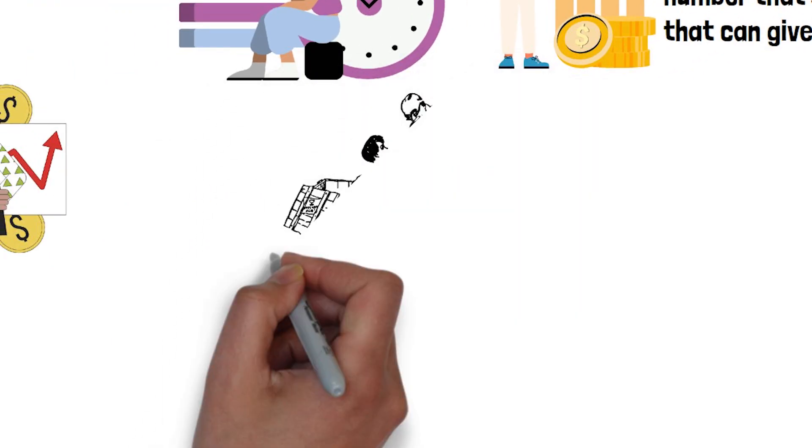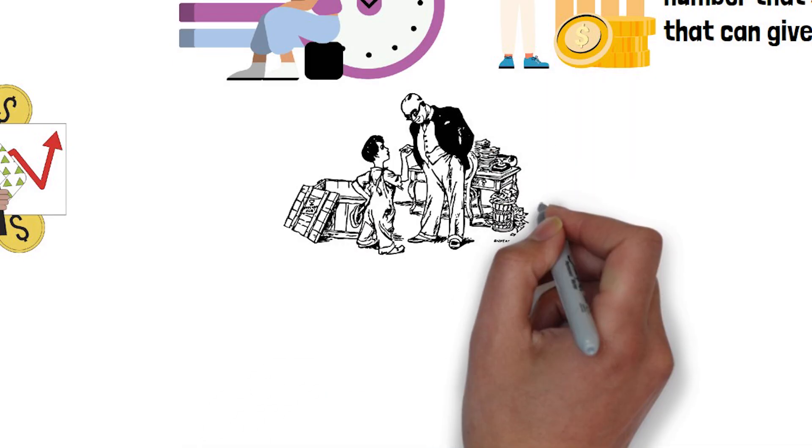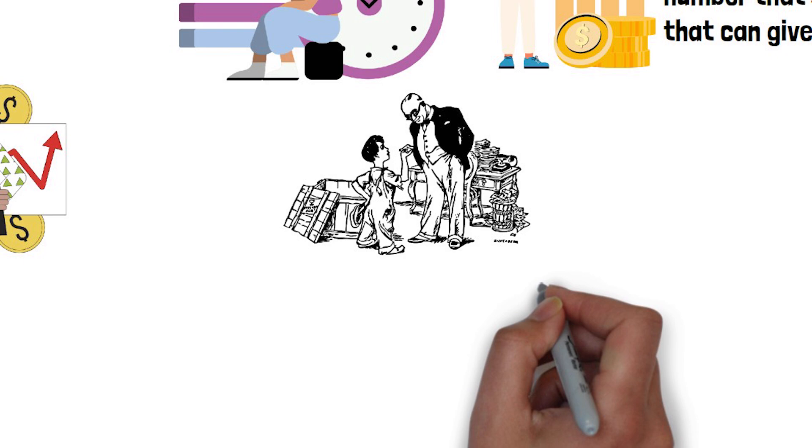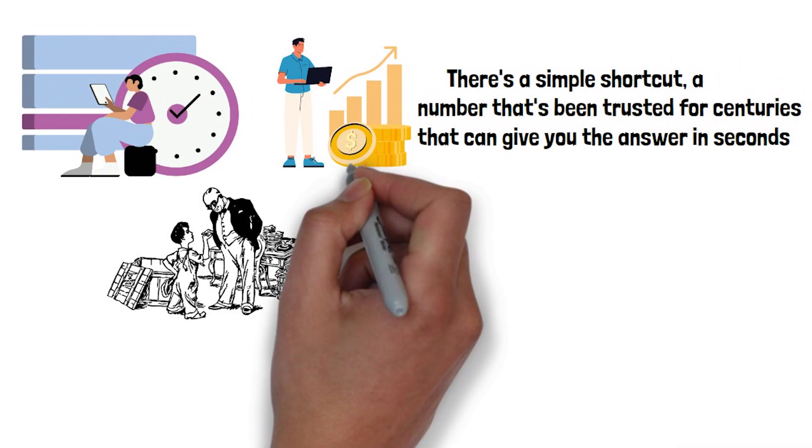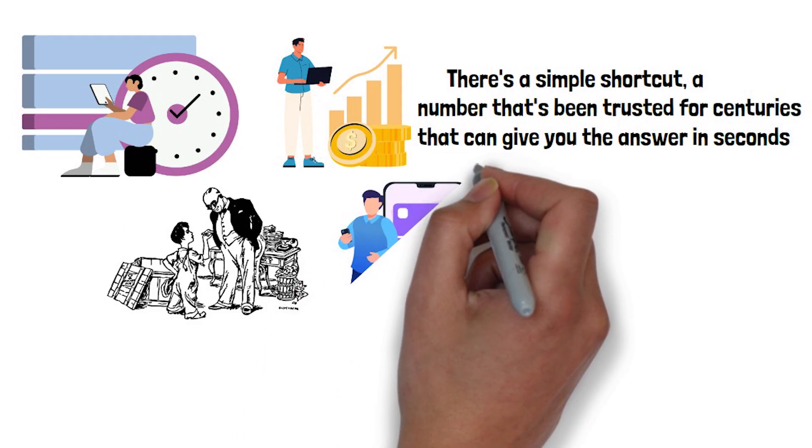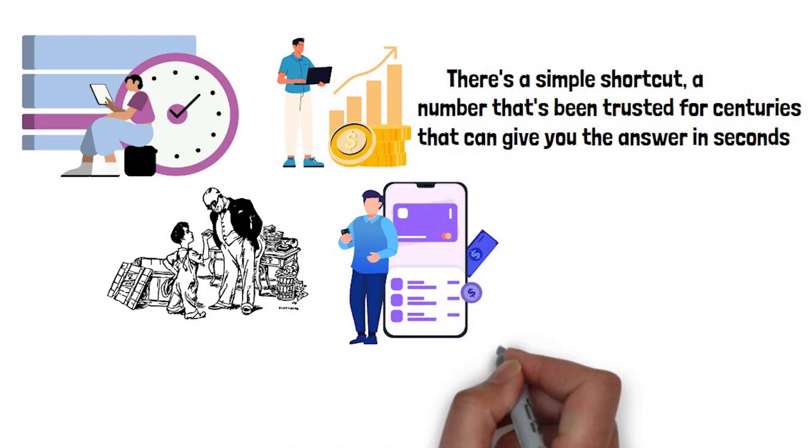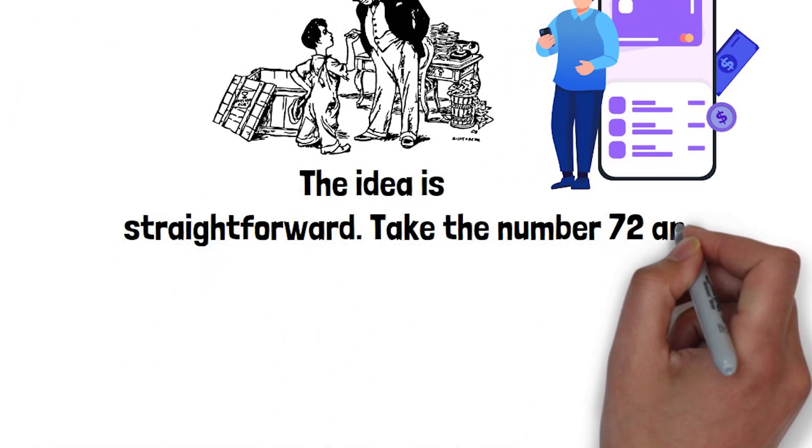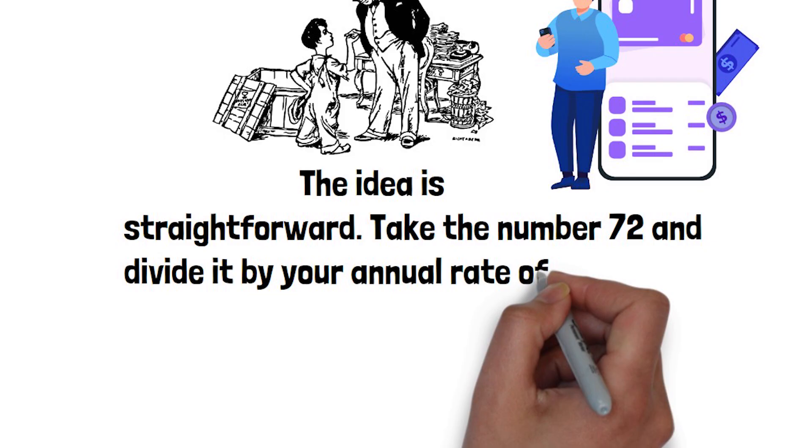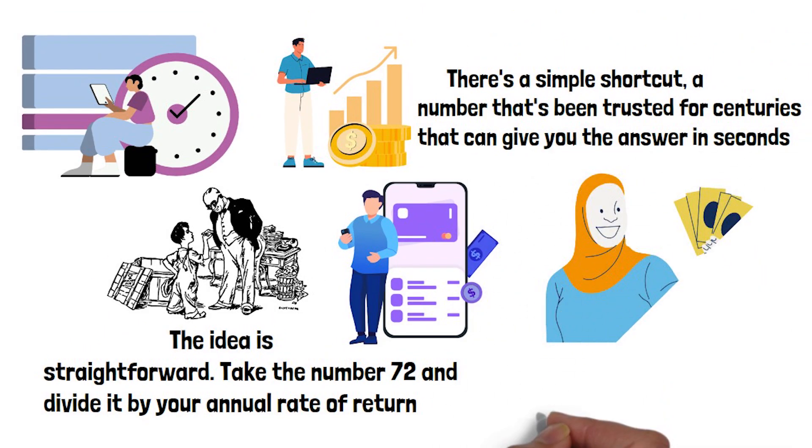A simple mental shortcut first used by bankers and merchants over 500 years ago to estimate how fast money could grow long before calculators or spreadsheets existed. Despite its age, it remains practical today because it's easy to use, quick to calculate, and surprisingly revealing. The idea is straightforward. Take the number 72 and divide it by your annual rate of return. The result tells you roughly how many years it would take for your money to double.